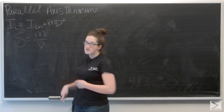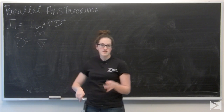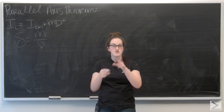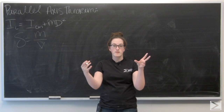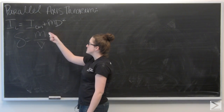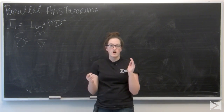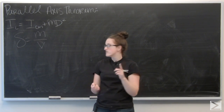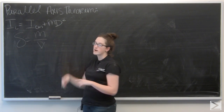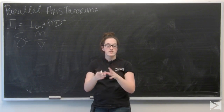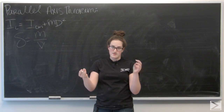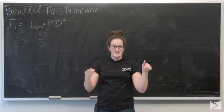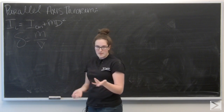I've already written the parallel axis theorem down for us. Basically it says that the moment of inertia around an axis some distance from the object is equal to the moment of inertia of the object when the axis is through its center of mass, plus Md squared, where d is the distance from the center of mass of the ball to the axis it's rotating around, and M is the mass.